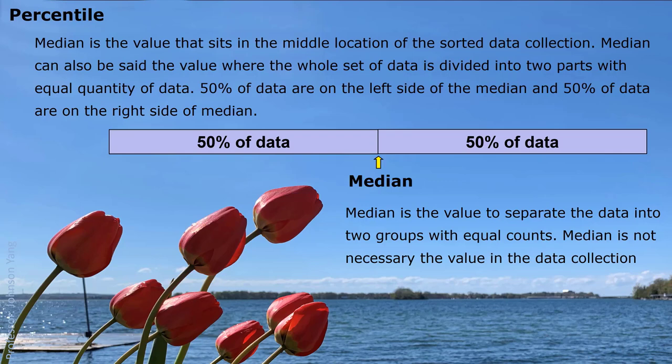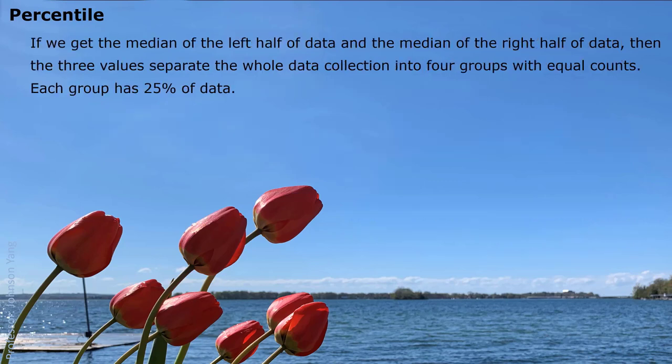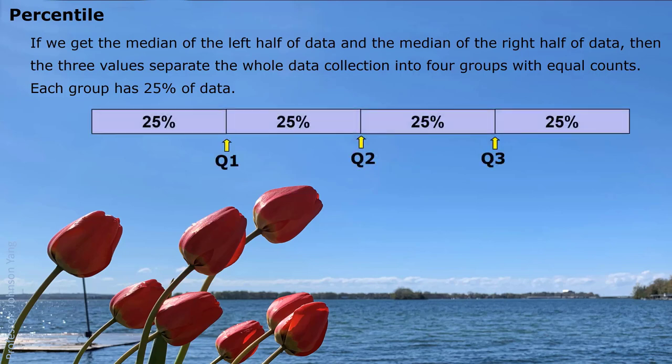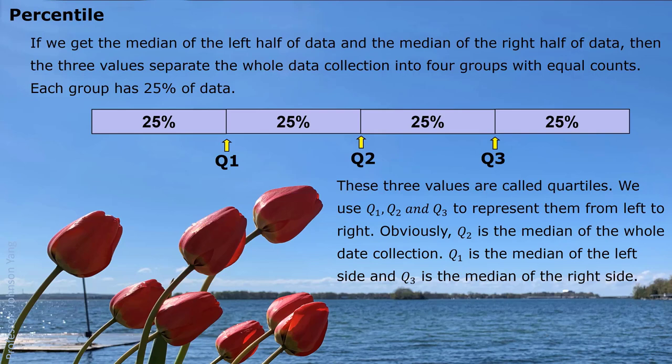Median is not necessary the value in the data collection. Percentile. If we get the median of the left half of the data and the median of the right half of the data, then we have three values. These three values separate the whole data collection into four groups with equal counts. 25% of data belong to each group. So, these three values are called quartiles.